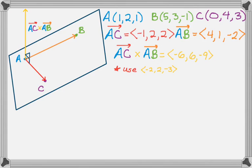So I'm going to use <-2, 2, -3>. You get the same result if you use <-6, 6, -9>, so you don't really need to do that, but it makes all the calculations I'm going to end up doing a little bit smaller.